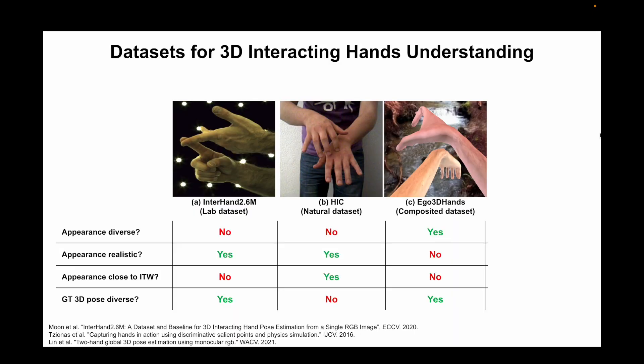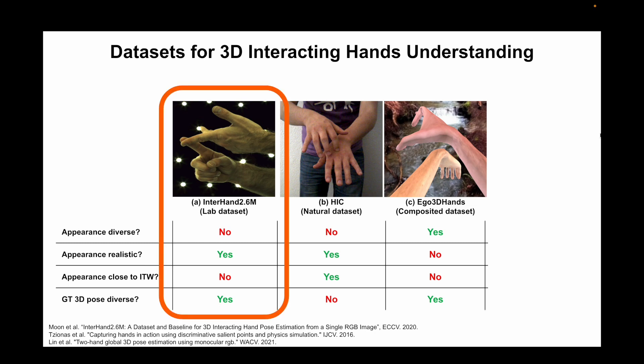Let's first analyze the pros and cons of each dataset type. The InterHand 2.6M dataset, which belongs to the lab dataset category, provides large-scale real-captured images with diverse 3D ground truth. One downside is the monotonous image appearances, as all images are captured from a studio, not from diverse indoor-outdoor environments.